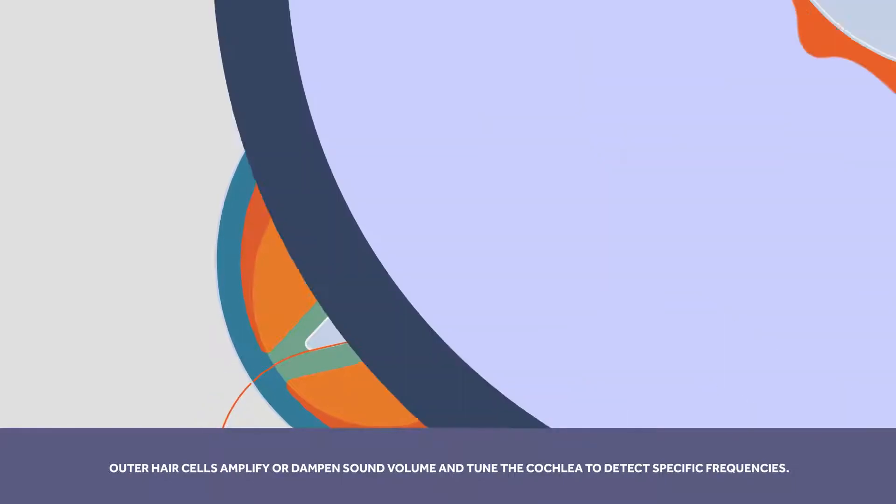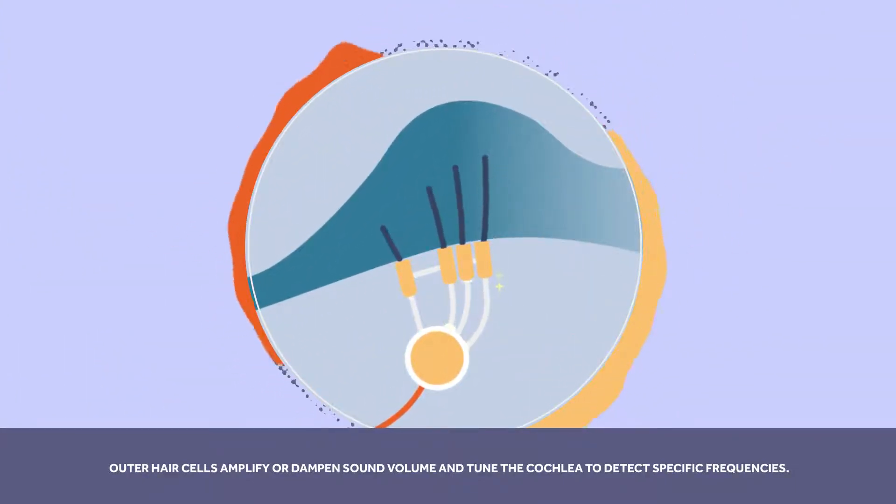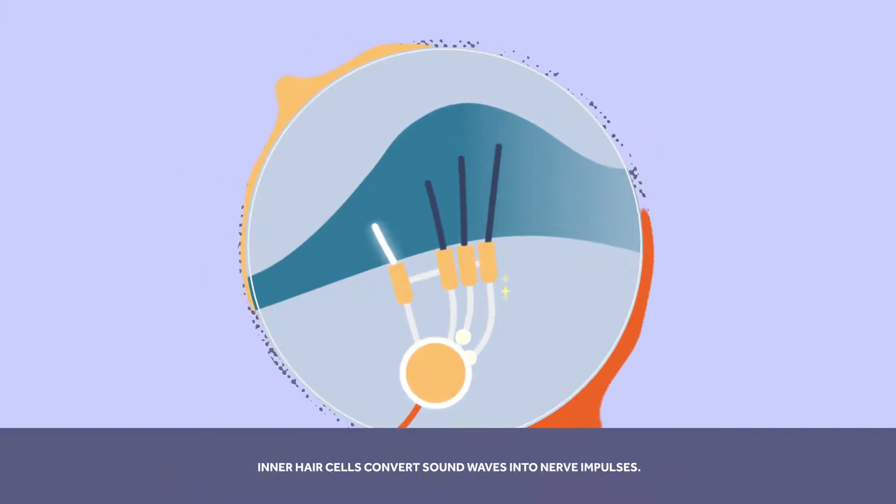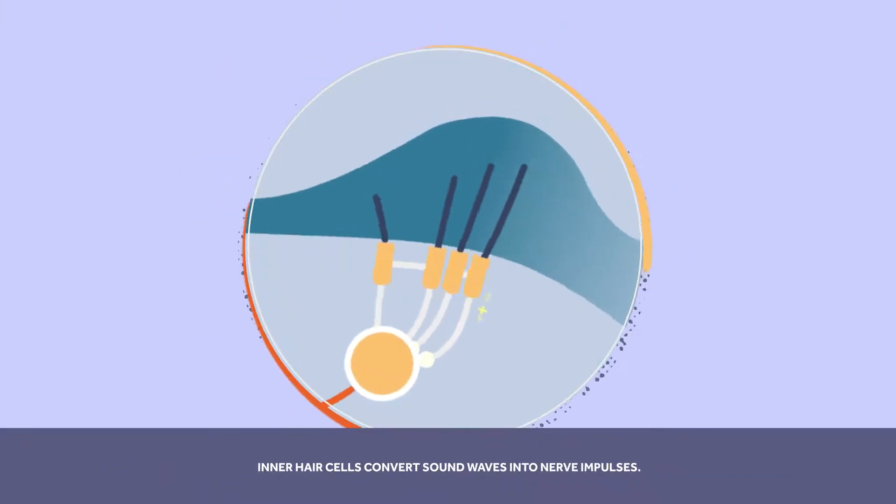Outer hair cells amplify or dampen sound volume and tune the cochlea to detect specific frequencies. Inner hair cells convert sound waves into nerve impulses.